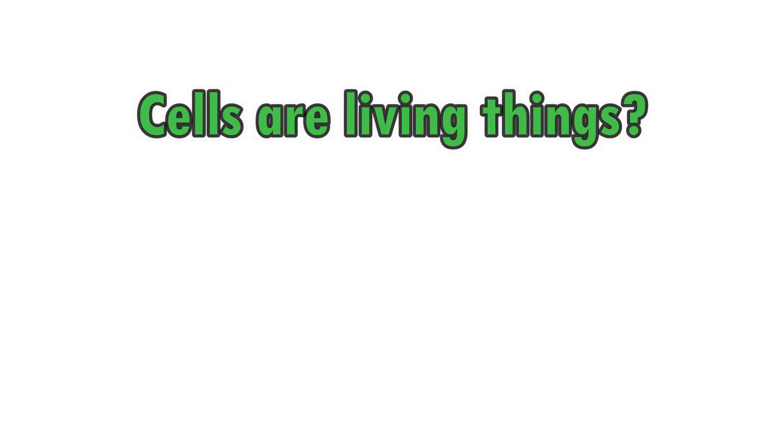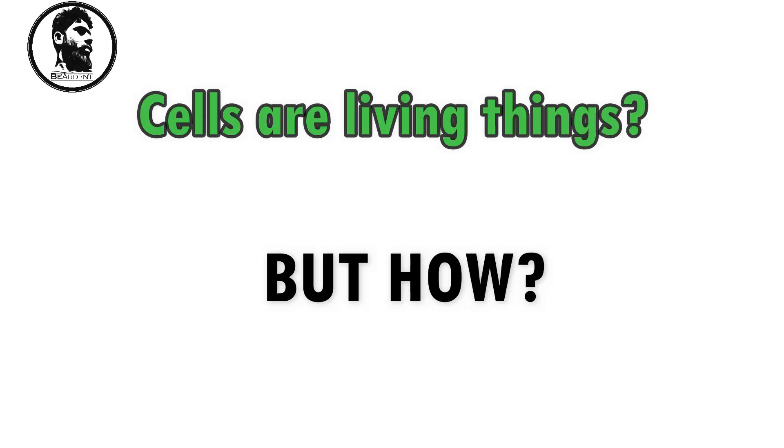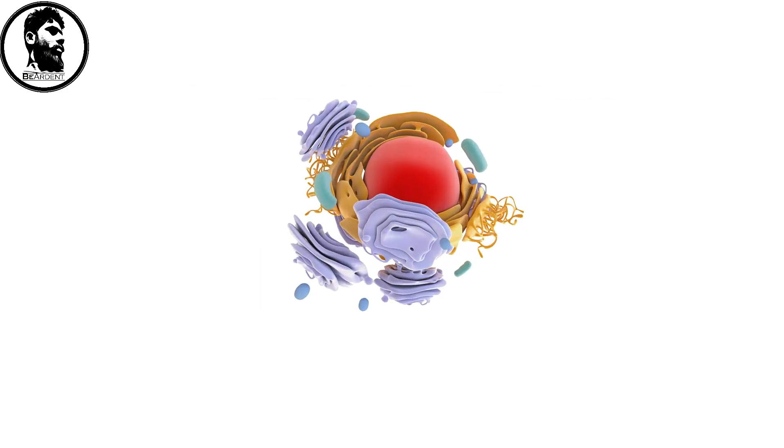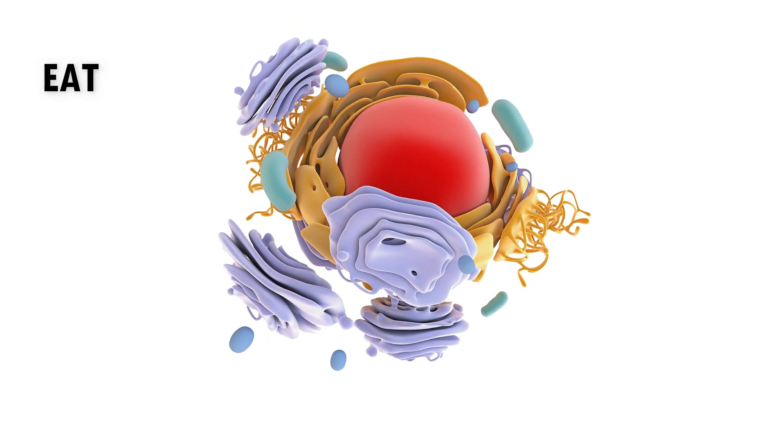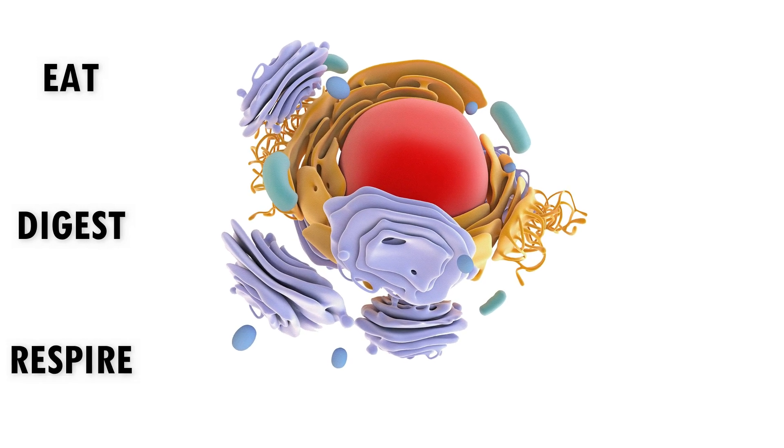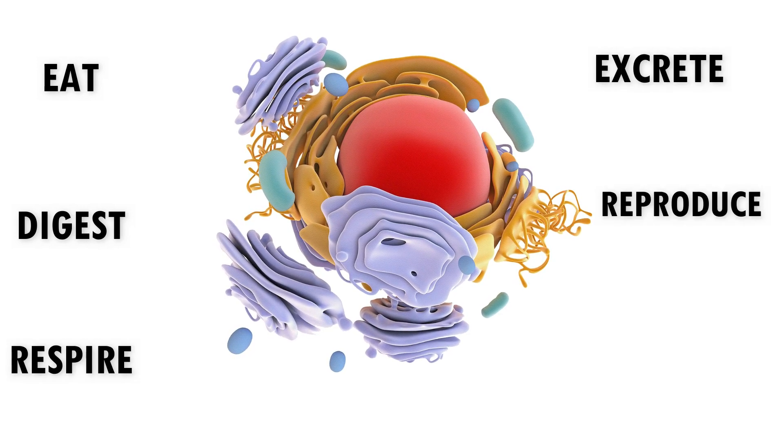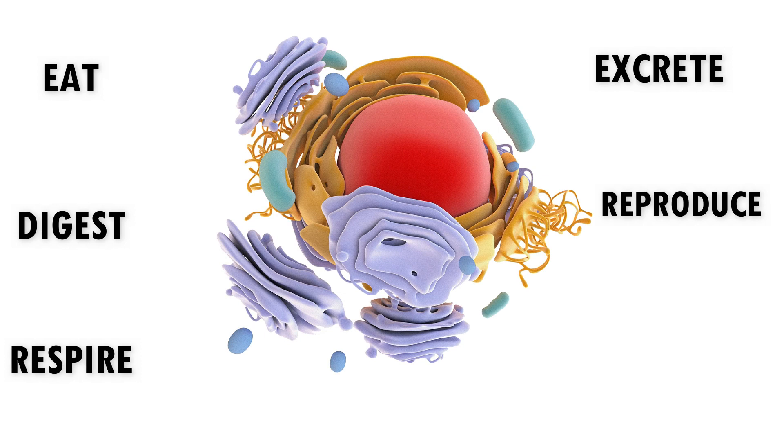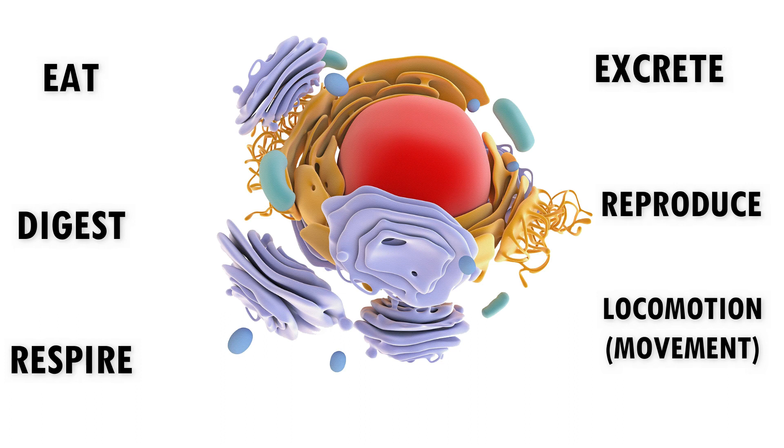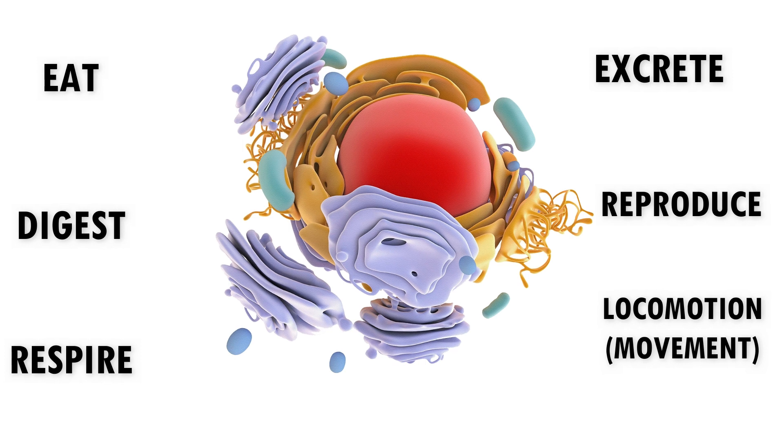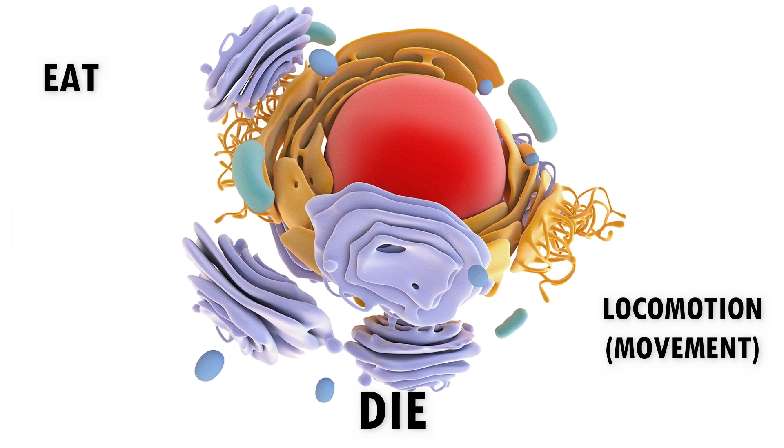Now as I said cells are living things then what does this exactly mean? This means that cell can eat like us, digest like us, respire like us, excrete like us, reproduce like us. That means it can grow like us in numbers and size and it can also show locomotion as you can see in amoeba. Amoeba is single cell organism and it can move. So cell can also move and cell can die also.